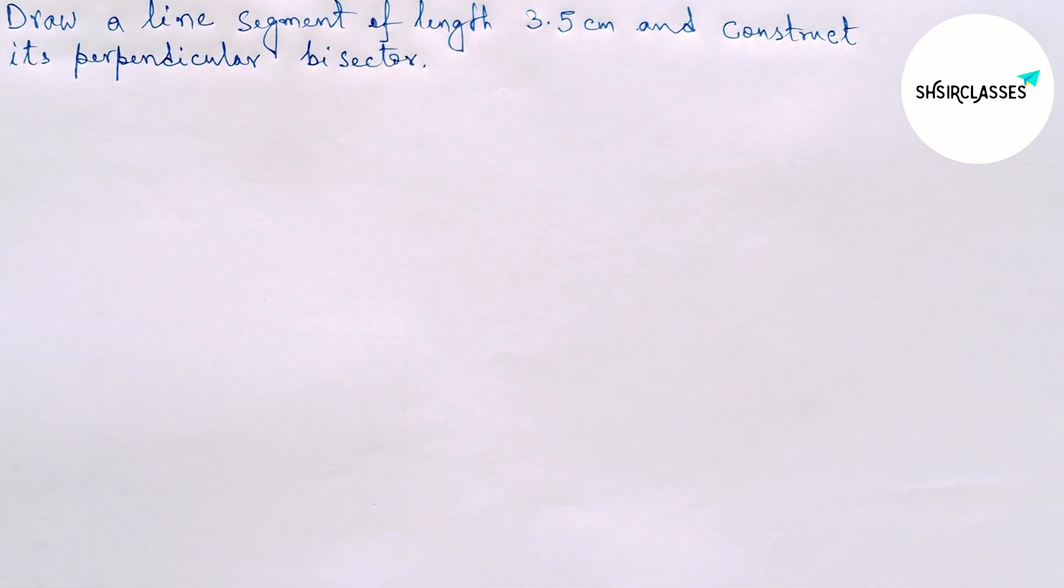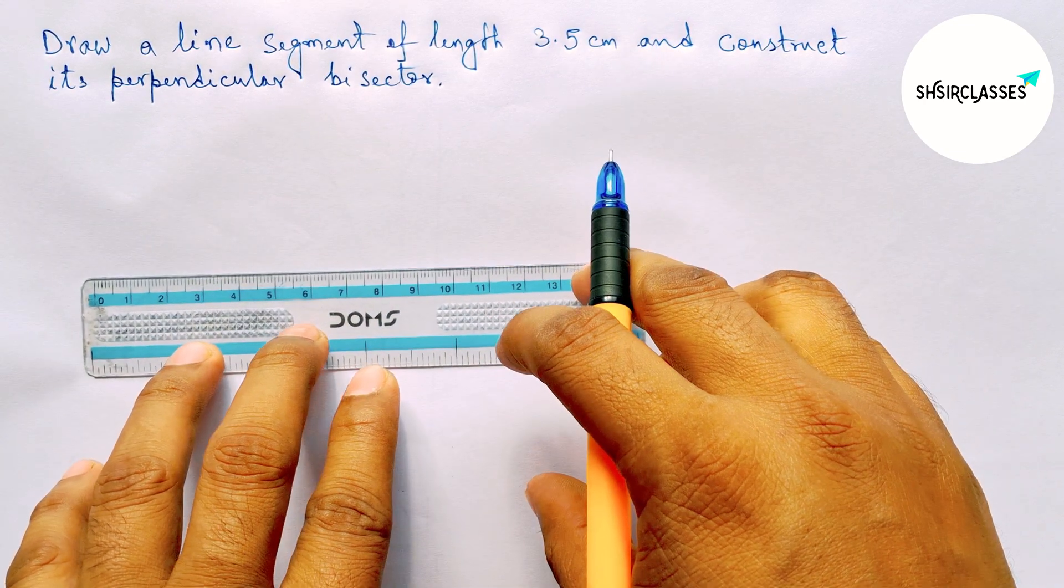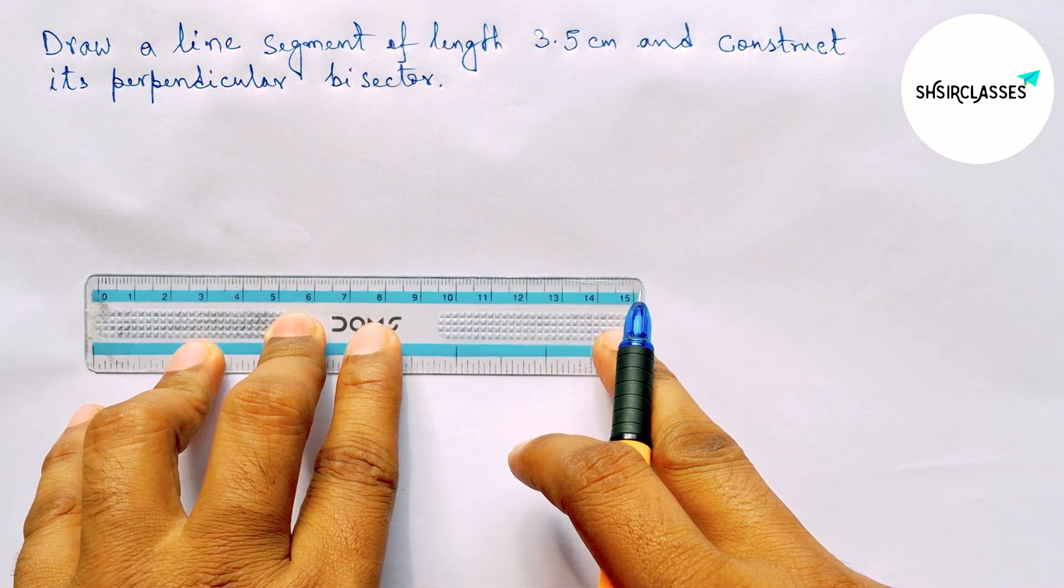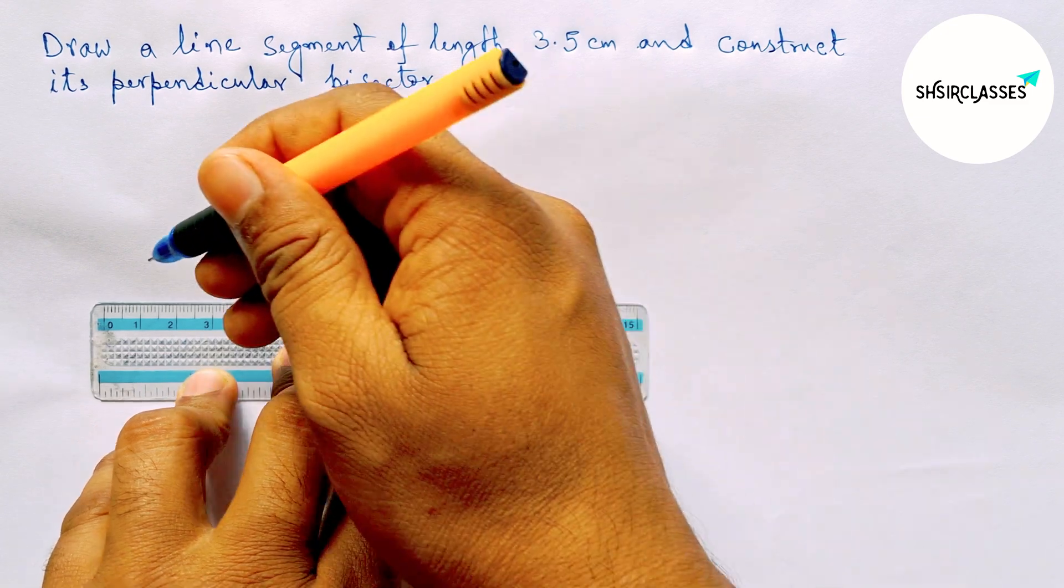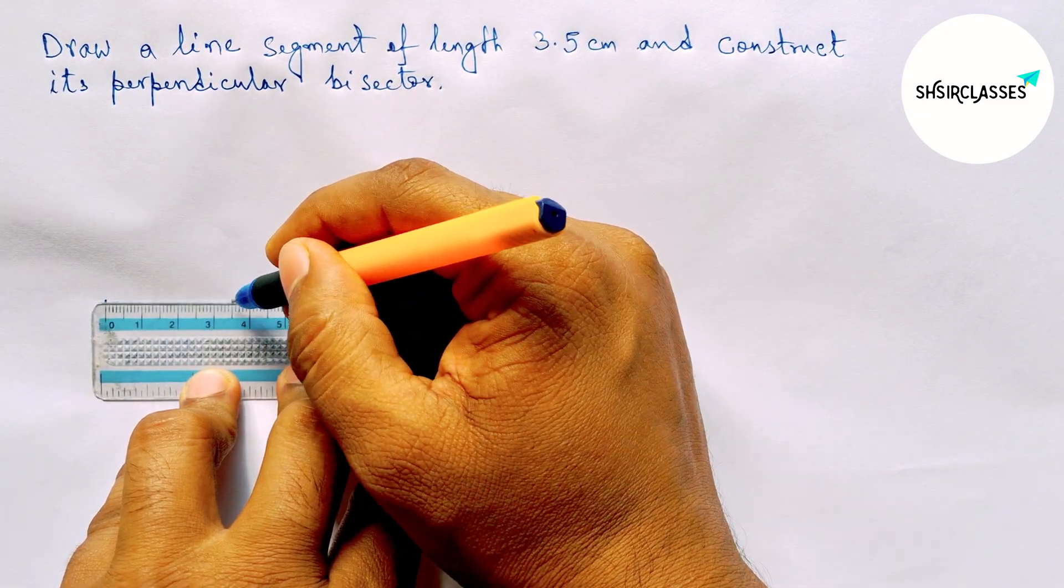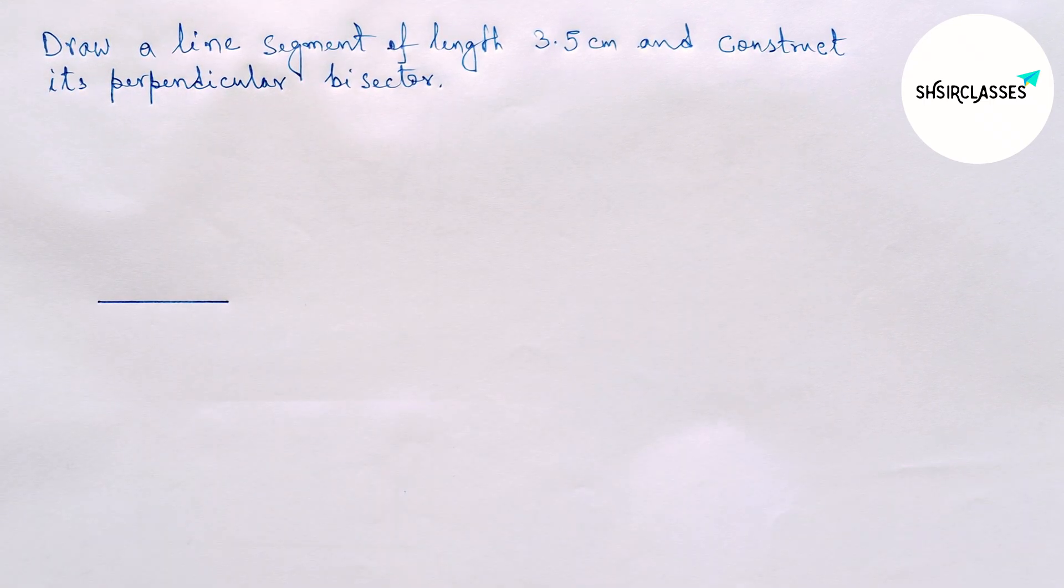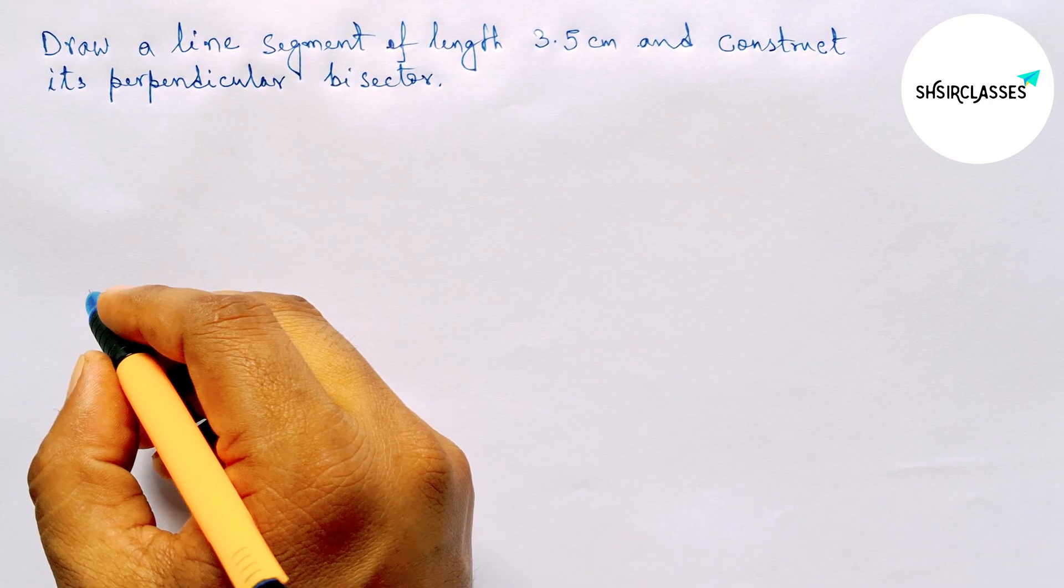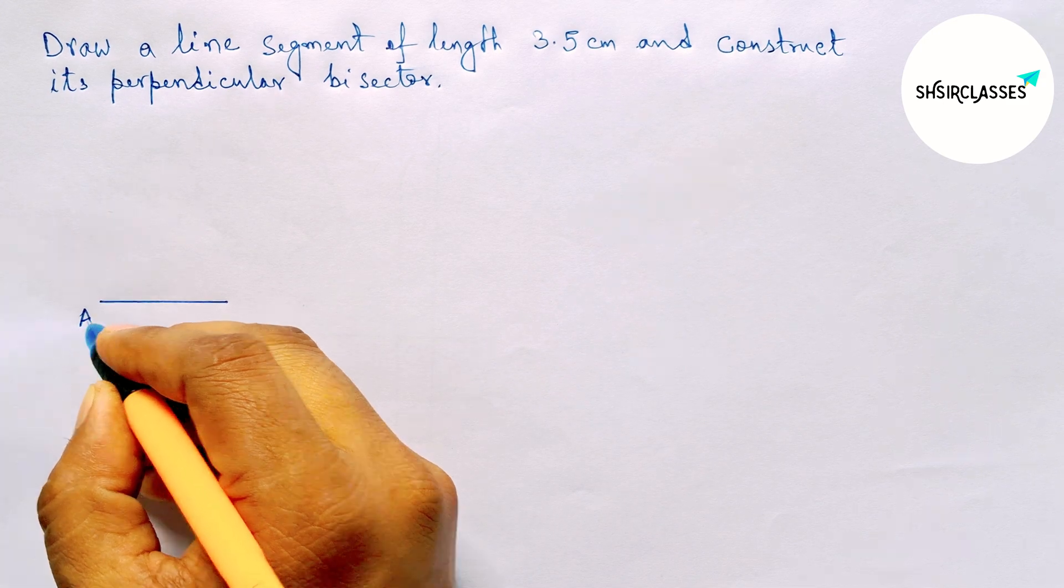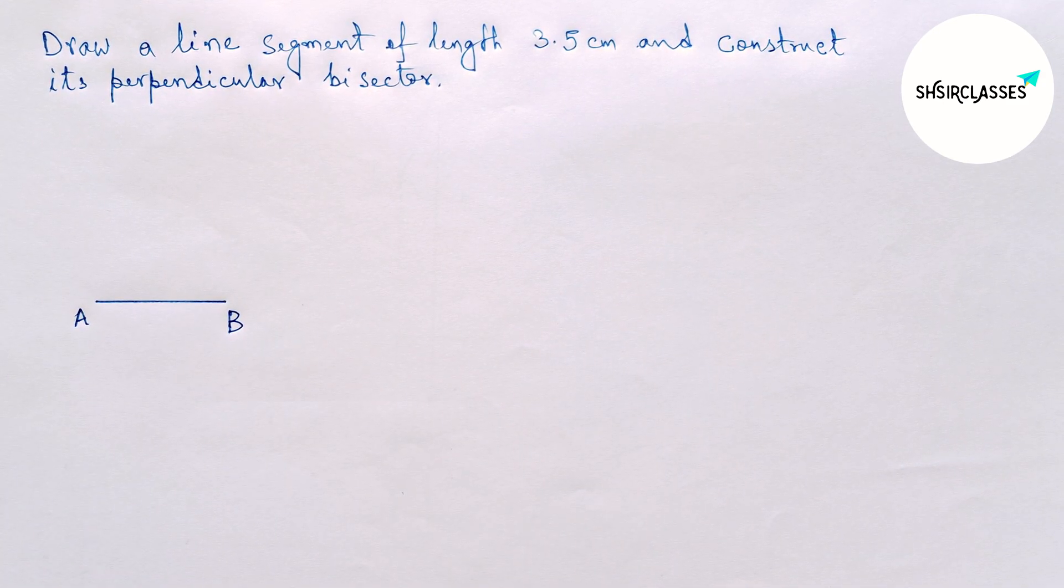So let's start the video. First of all, let us draw a line segment of length 3.5 centimeters. So this is the 3.5 centimeter line segment. Next, labeling here point A and here B. Now we'll construct